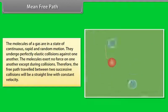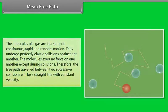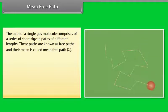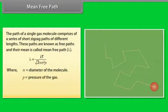Mean free path: The molecules of a gas are in a state of continuous rapid and random motion. They undergo perfectly elastic collisions against one another. The molecules exert no force on one another except during collisions. Therefore, the free path travelled between two successive collisions will be a straight line with constant velocity. The path of a single gas molecule comprises a series of short zigzag paths of different lengths. These paths are known as free paths and their mean is called mean free path. Lambda equals KT upon root 2 pi sigma square P, where sigma equals diameter of the molecule, P equals pressure of the gas, T equals temperature of the gas, K equals Boltzmann's constant.